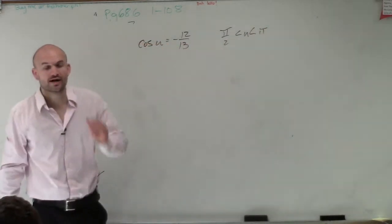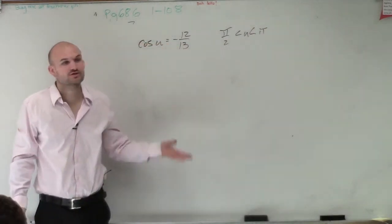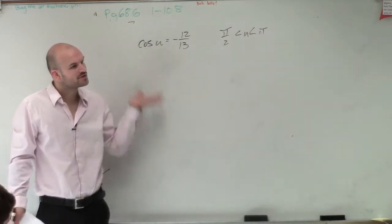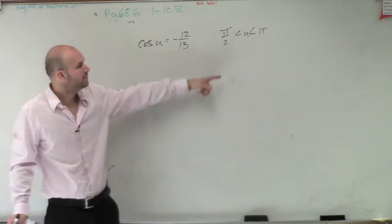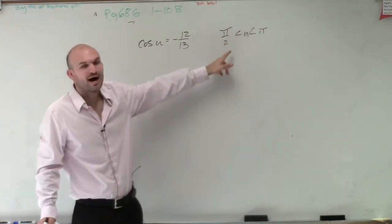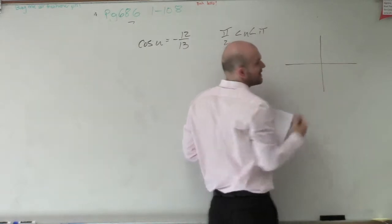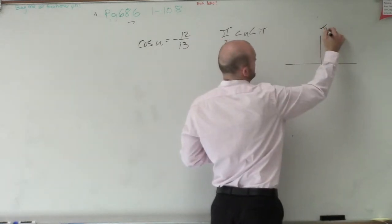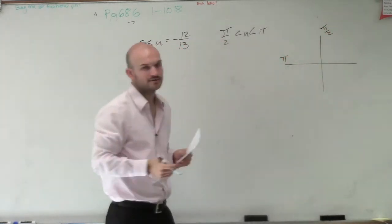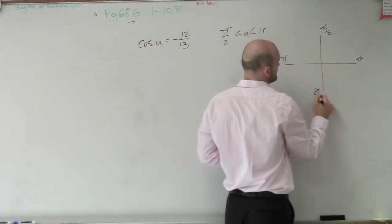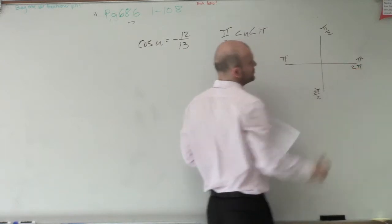Our constraint is π/2 is less than u, which is less than π. So we need to make sure before we draw our triangle, we can draw a triangle in four different ways in the first, second, third, or fourth quadrant. But they say the angle is between π/2 and π. We need to go back and remember, where is π/2 and π? Well, here's π/2 and here's π. This is 3π/2, and all the way around would be 2π.